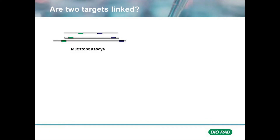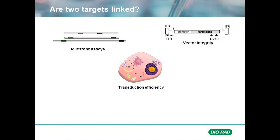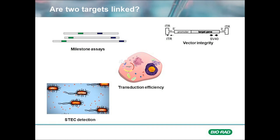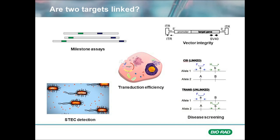There are many applications that take advantage of linkage. Some that jump to mind are milestone assays, used in biopharma to determine the length of residual DNA fragments in biologic products; integrity assays, used to verify whether inserted vectors are intact or fragmented; transduction efficiency assays, used to determine the number of cells that were effectively transduced or transfected; virulence detection assays, used to determine whether genes that produce toxic components are present in the same cell; and cyst transmutation co-localization, that can be used for screening carriers of genetic disorders.